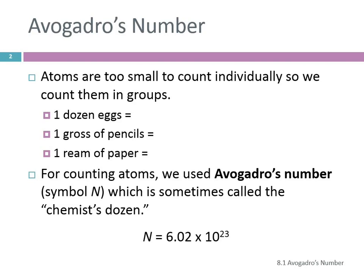Atoms, as I think we understand, are too small to even see, and so they're much too small to count. It's hard to count something you can't even see. So instead of counting them individually, we count them in groups.